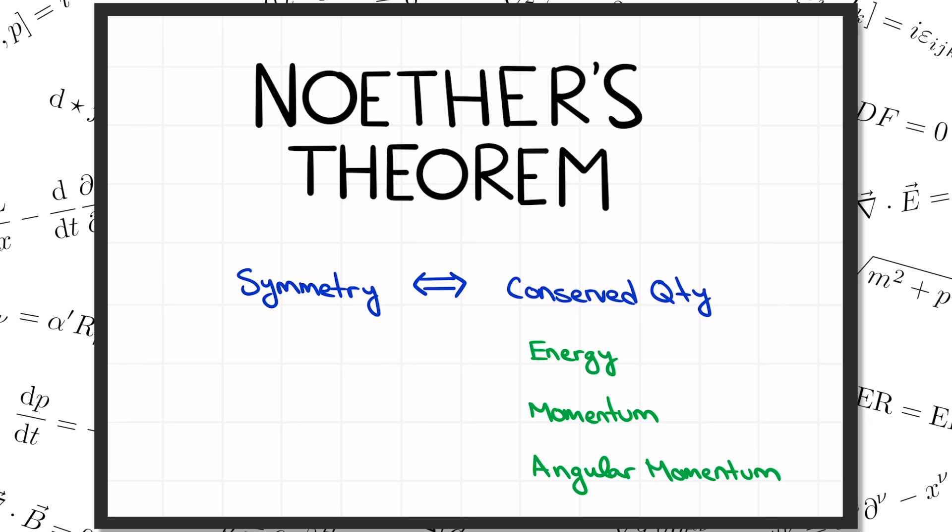On the other side of Noether's theorem are symmetries. For example, if you think about the gravity field of a point-like star, or the electric field of a charged particle, it appears the same no matter what direction you look at it from. That's an example of spherical symmetry. You can pick up the system and rotate it around any way you like, but it won't change anything about the physics. We therefore call this kind of symmetry rotation invariance.